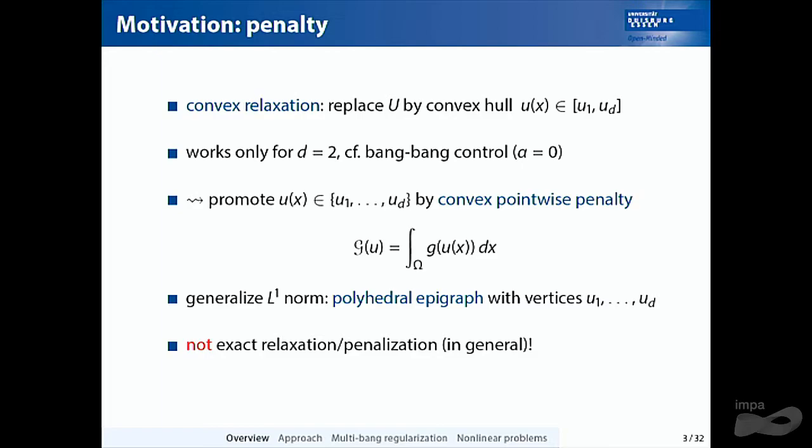For more than two materials, you need to do something different. The idea is to take a page from linear optimization or sparsity optimization by trying to promote attainment of the intermediate values by adding a pointwise convex penalty. In every point, you add some convex function G which, when optimizing, should prefer the given values. The goal is to design G so that this holds — taking as a starting point the well-known sparsity minimization with the L1 norm.